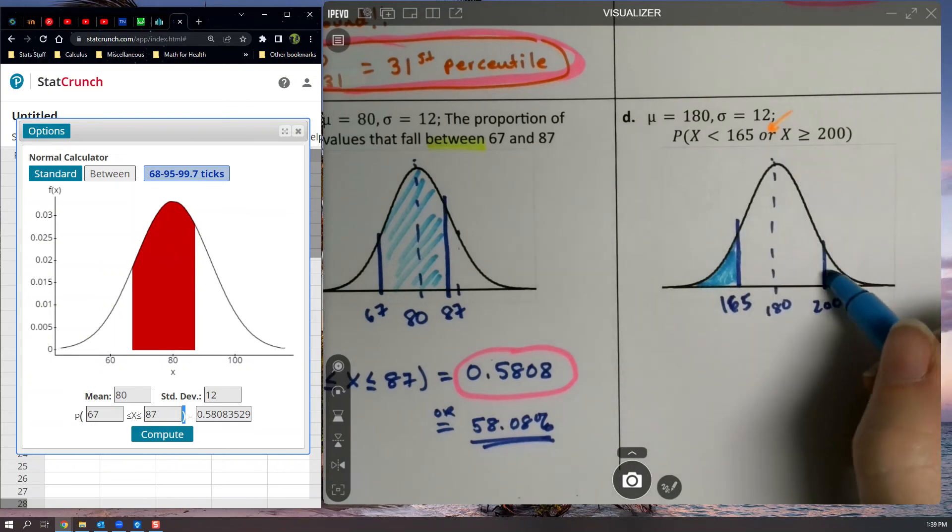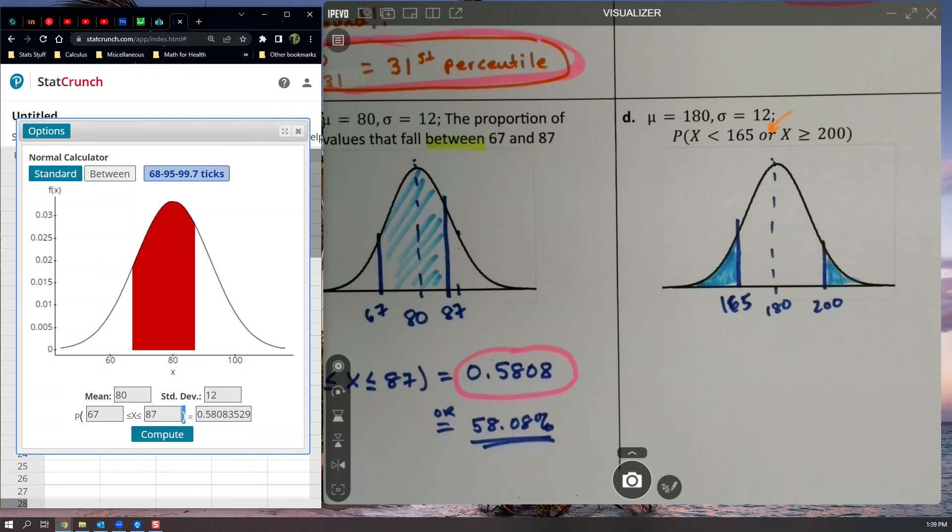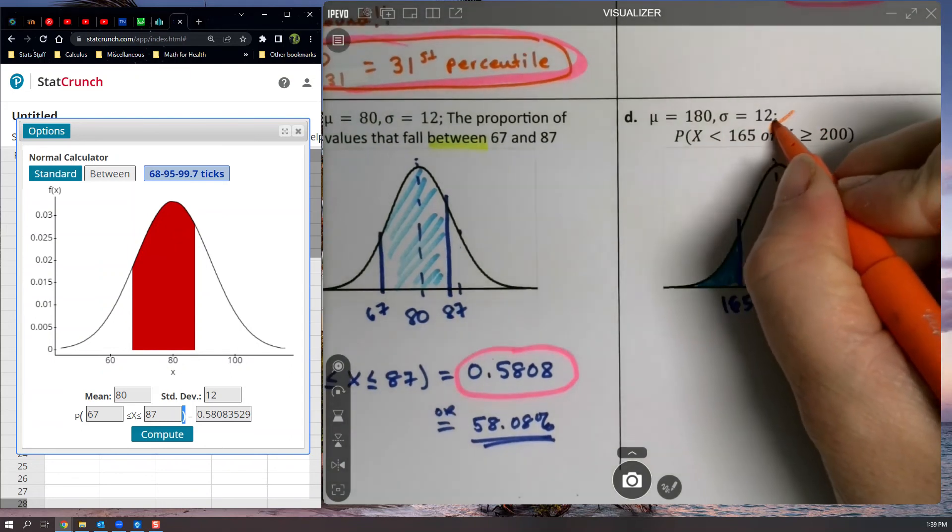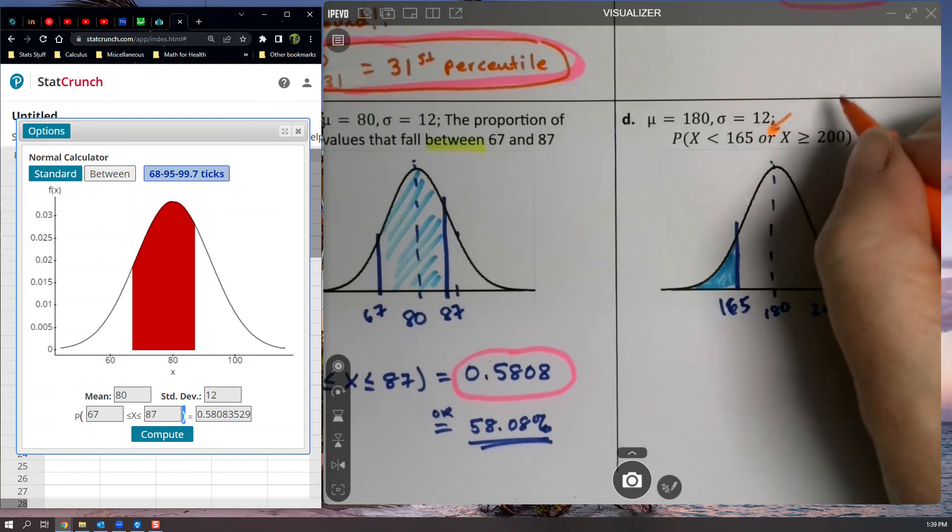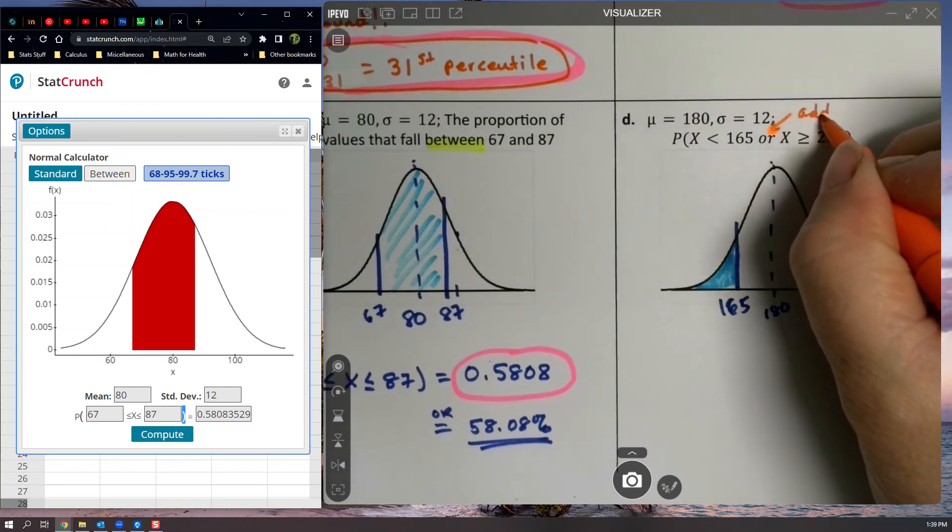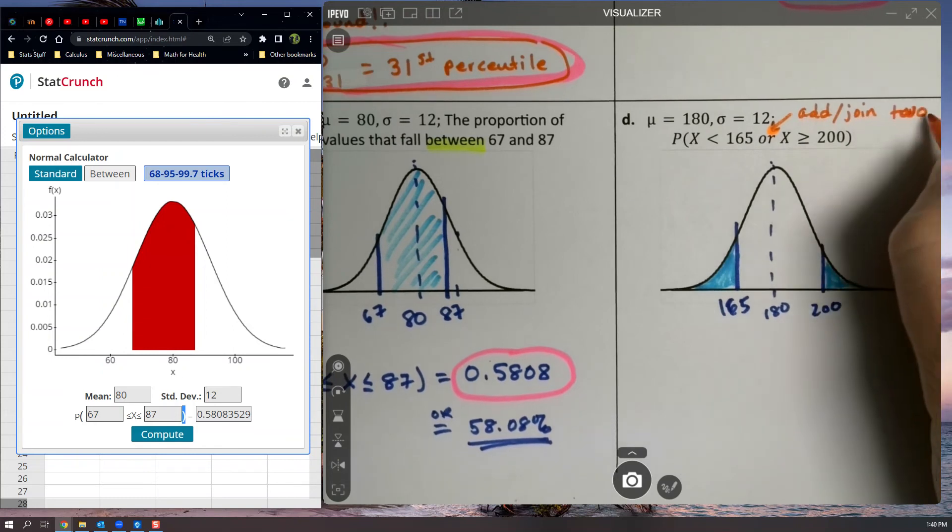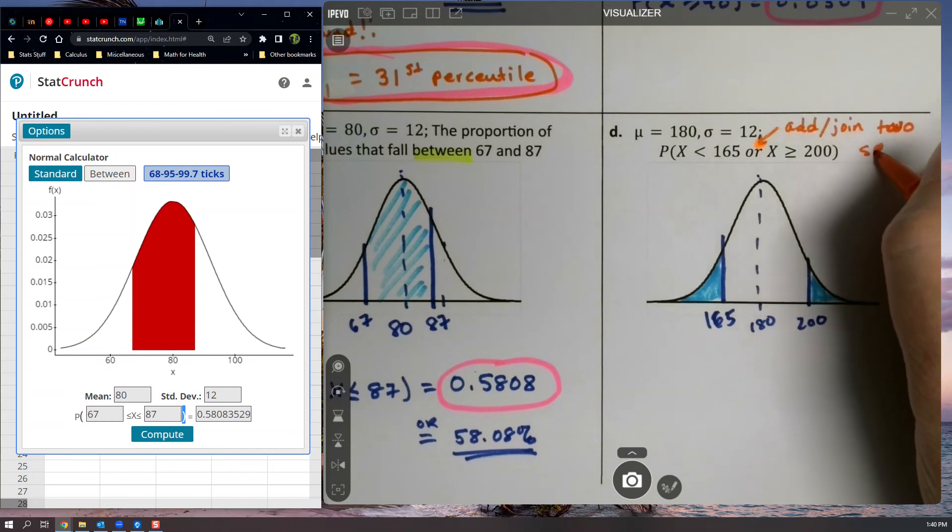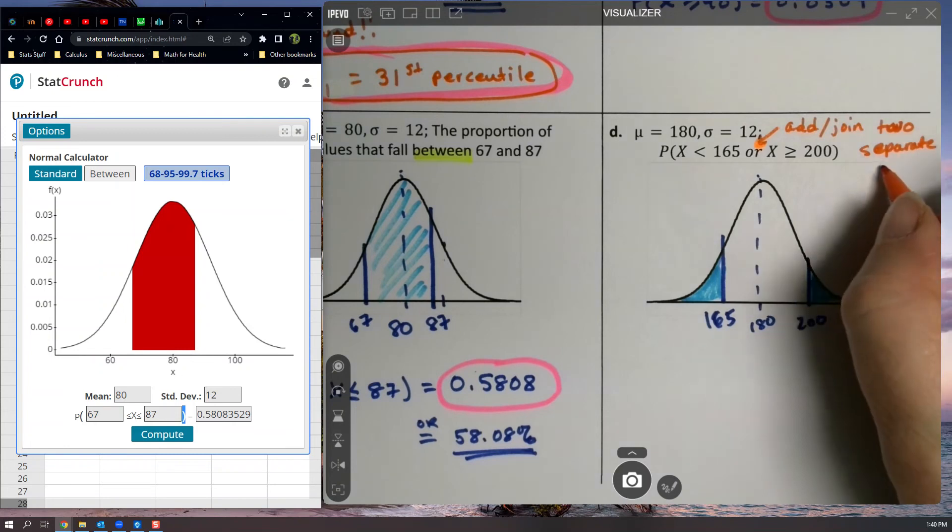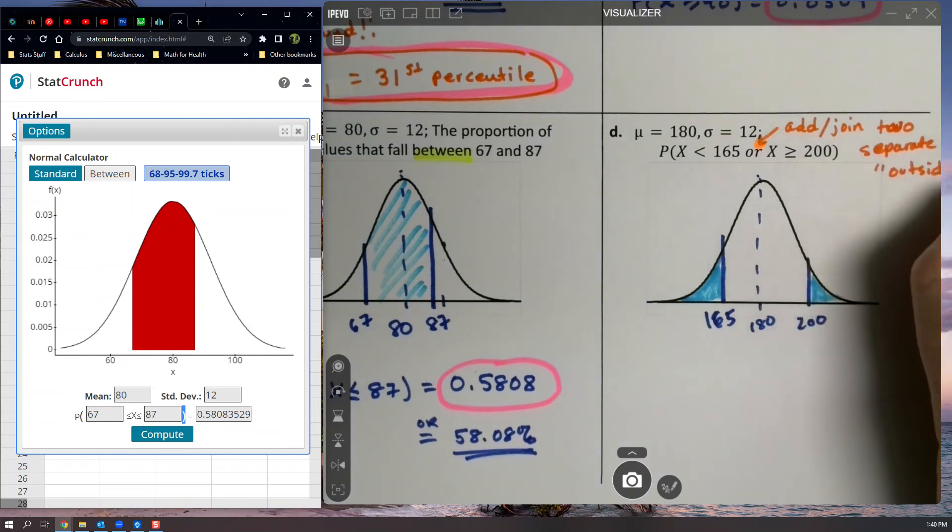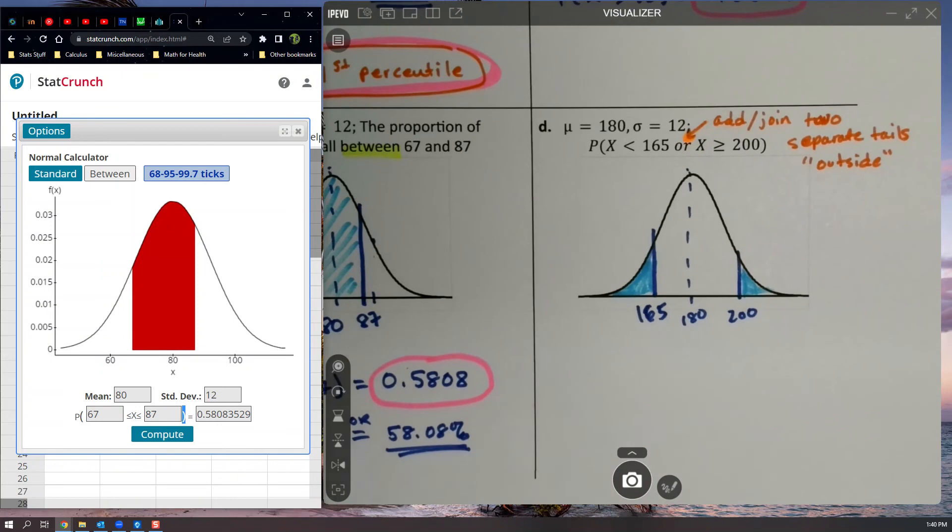Or greater than 200. I have the or in there because it's disjoint. You can't do both of them. So or means you add them up. You join them up. Two, that's two separate tails. Another way of saying it is that it's outside. That's what we said in the z-score problem a couple pages ago. We said it was outside these two z-scores. This is the area that's outside of those two x-values.